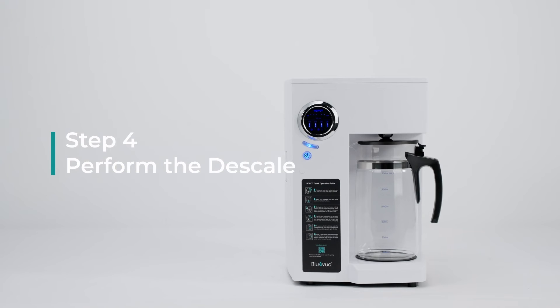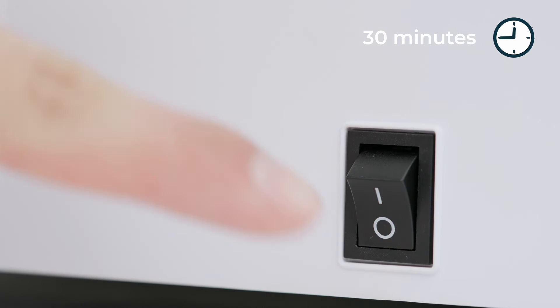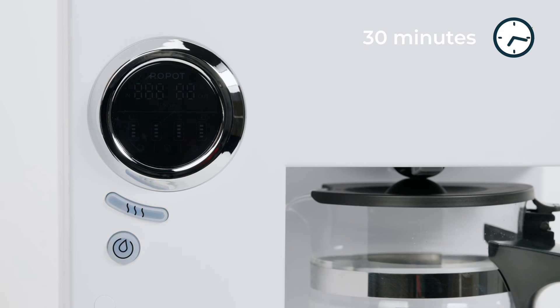Step four: Perform the descale. Select the largest water volume setting and start the system to circulate the descaling solution. After five minutes, turn off the system and let it soak for 30 minutes.